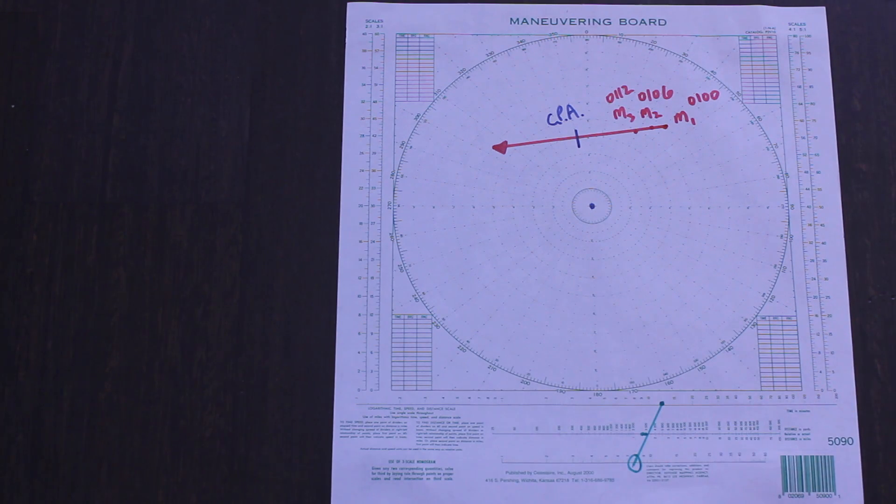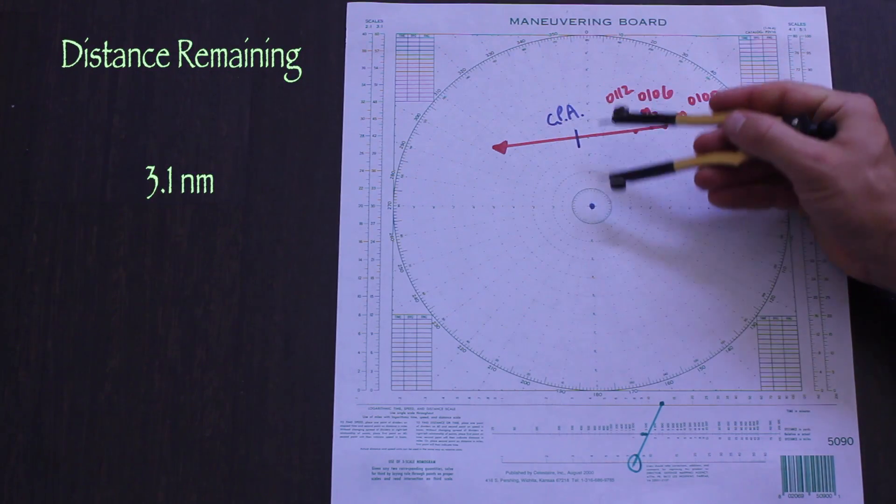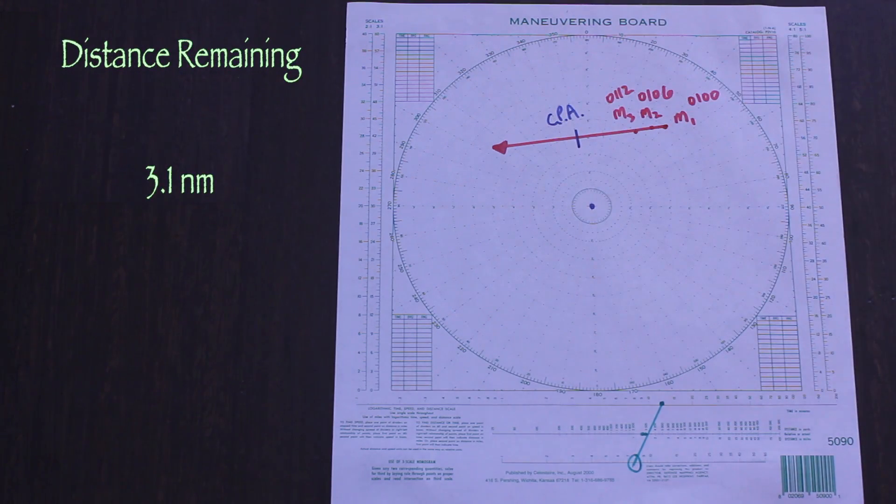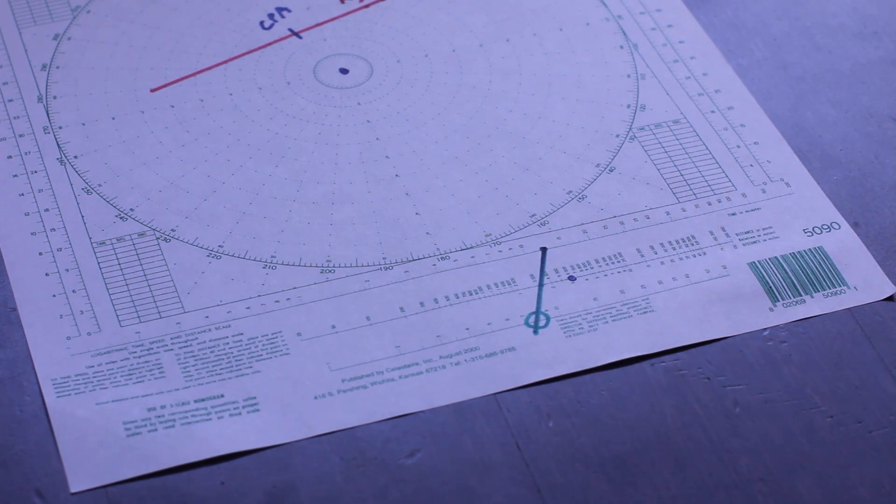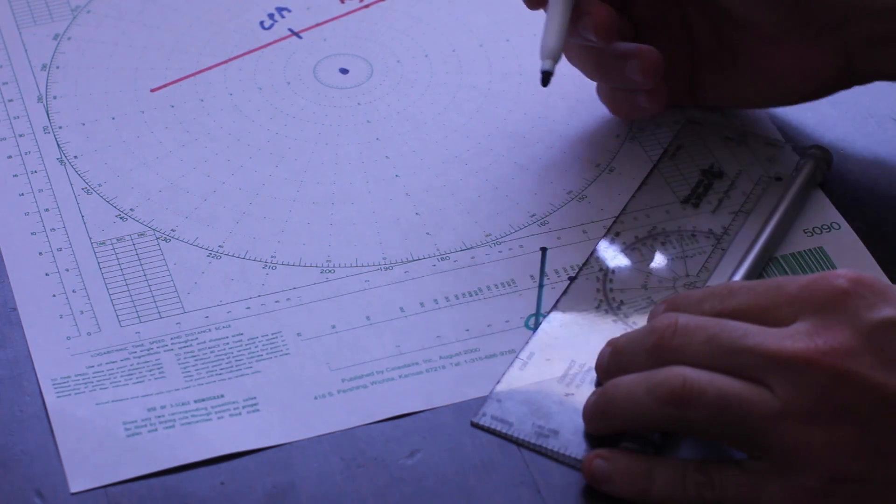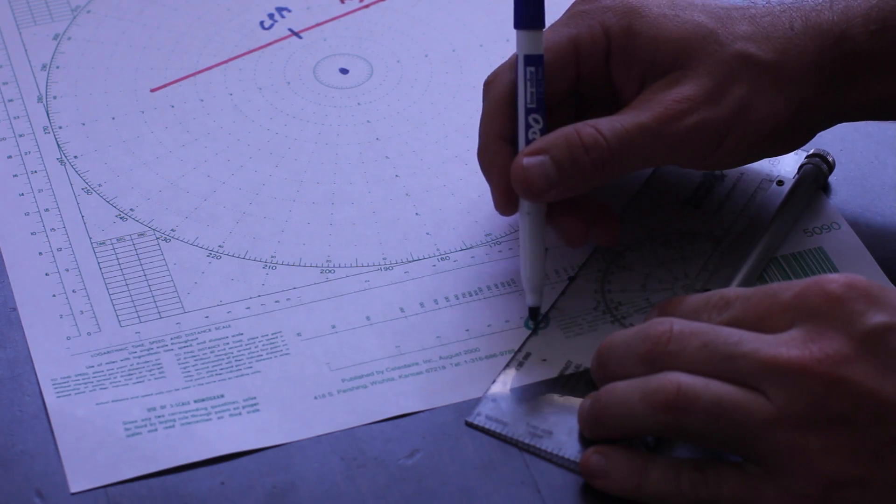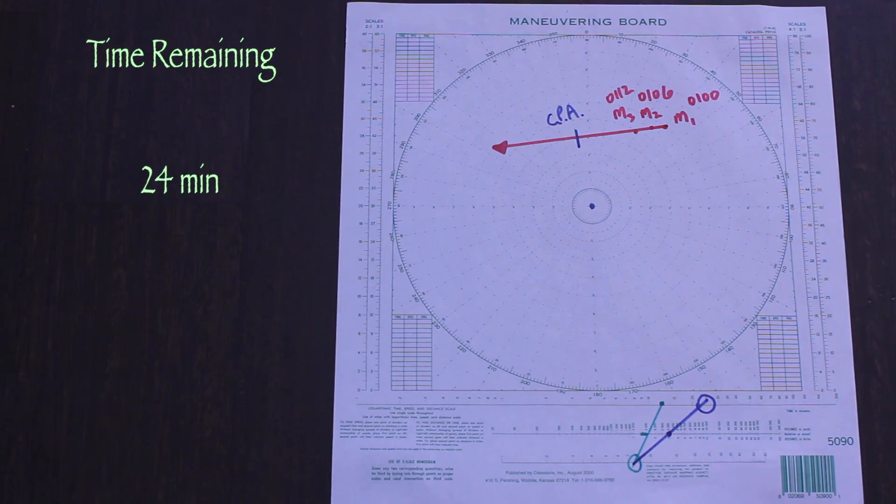Using the nomogram should be easy since we've already determined the speed of relative motion. We just have to work upwards, noting the distance the contact has remaining to cover before CPA. 24 minutes in this case, making CPA 0136.